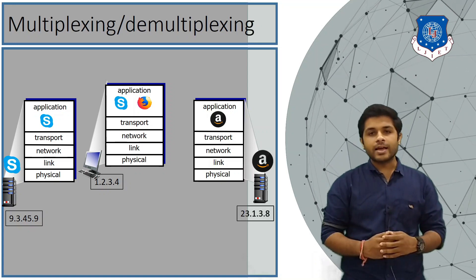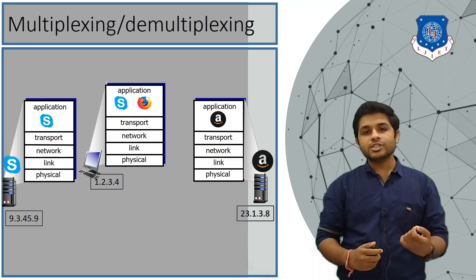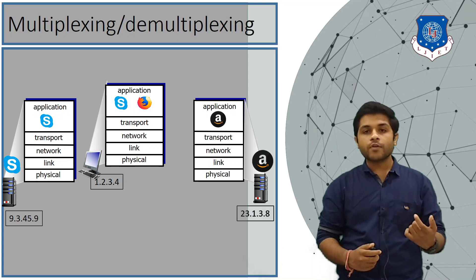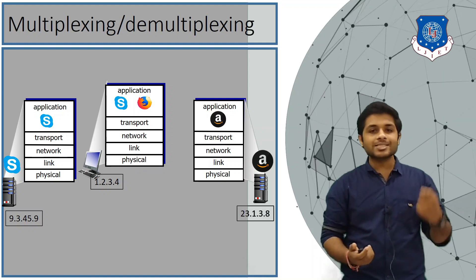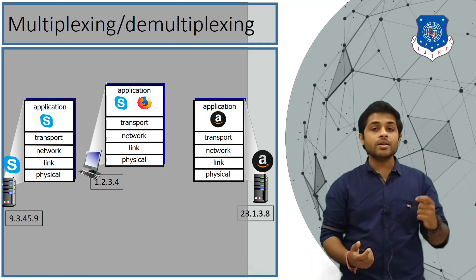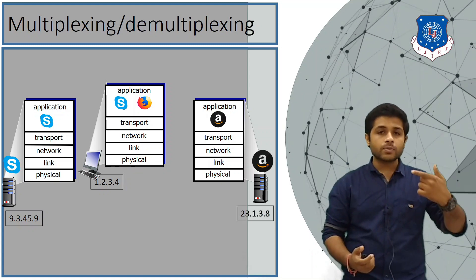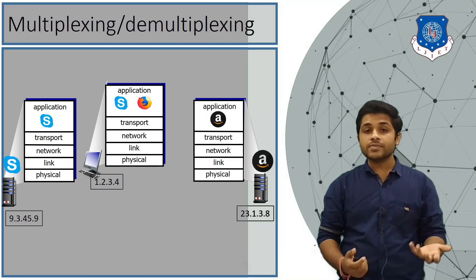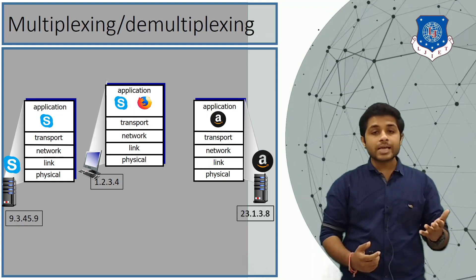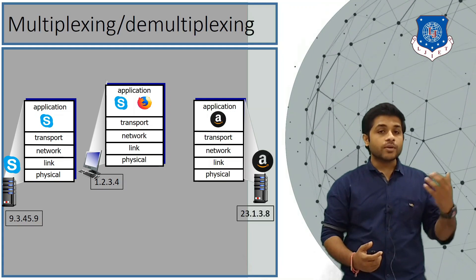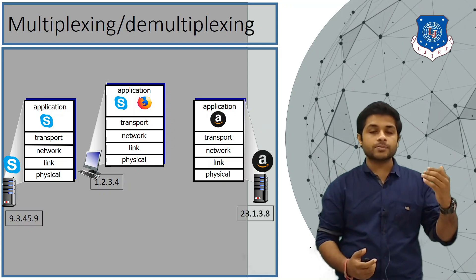Consider the situation where you want to send a message to your colleague on Skype. When any message is sent from your device, the flow goes from the top layer to the bottom layer — from application layer, transport layer, network, data link, and physical layer. When the Skype server receives your message, the flow of data is from the bottom layer to the top layer: physical, link, network, transport, and then application layer.